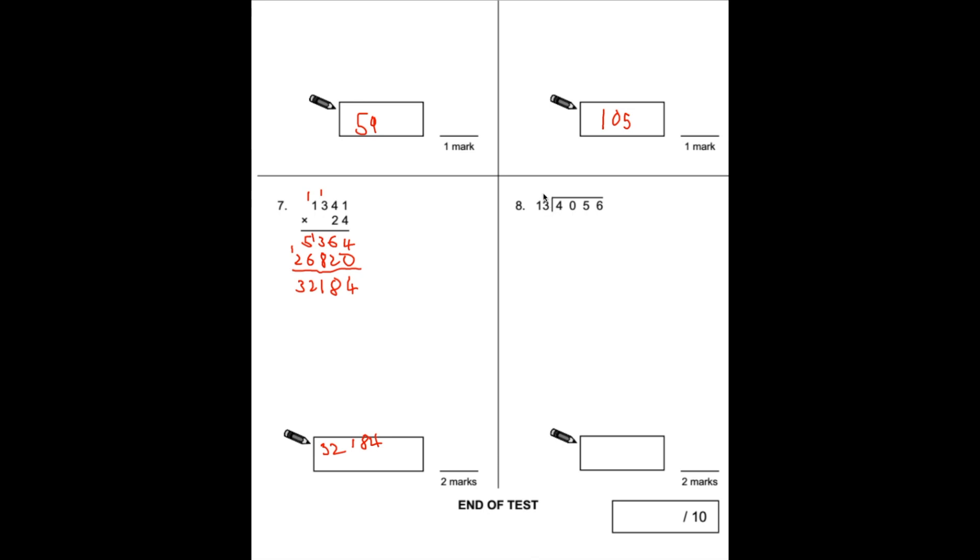Number 8: for this one, because 13 is going into this number and it's not too far off my 12 times table which I know, we can do short division for this rather than long division. If this number was bigger, we may want to use long division because it may make your life a little easier. I'm going to write my 13s down here.